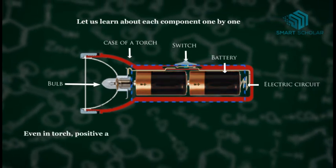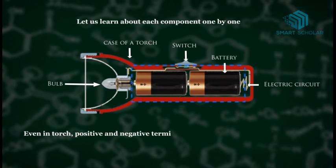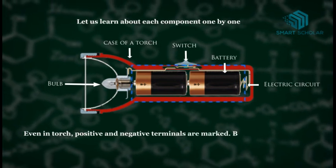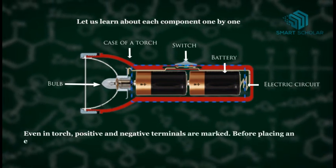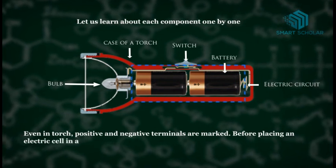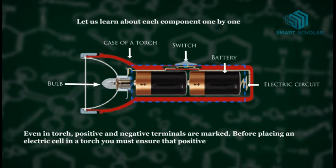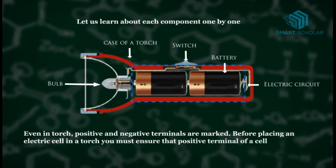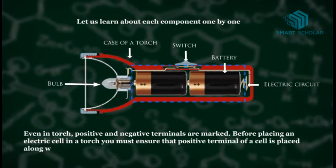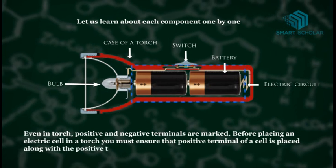Even in torch, positive and negative terminals are marked. Before placing an electric cell in a torch, you must ensure that positive terminal of a cell is placed along with the positive terminal of a torch.